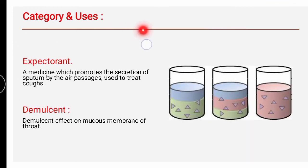The category of terpene hydrate linctus is expectorant — it expels out the cough, promotes the secretion of sputum, and gives relief from cough. It also has a demulcent effect on the mucous membrane of the throat. Demulcent means a soothing effect — it forms a soothing film over the mucous membrane and relieves pain in inflamed tissue in the throat region. Its uses include bronchitis, bronchiectasis, pneumonia, and COPD.